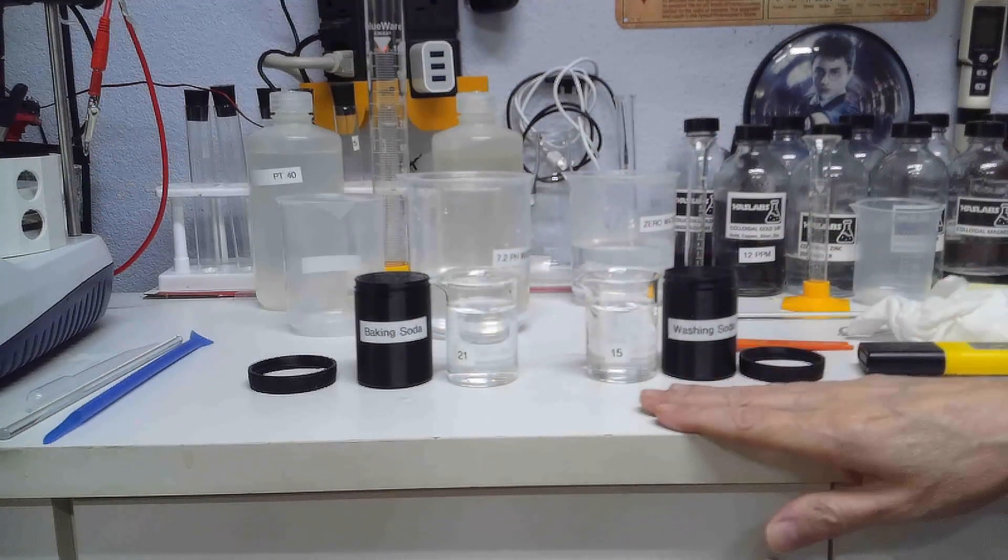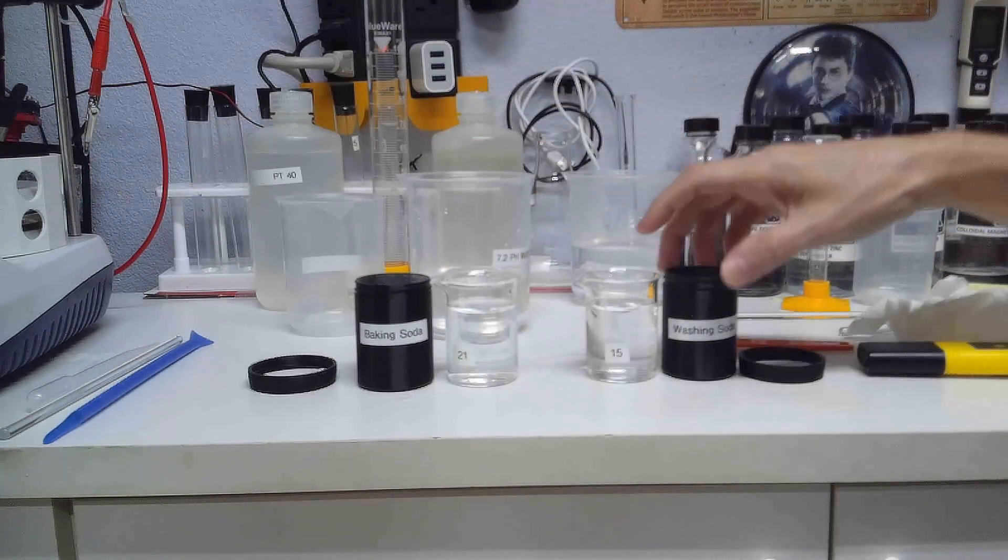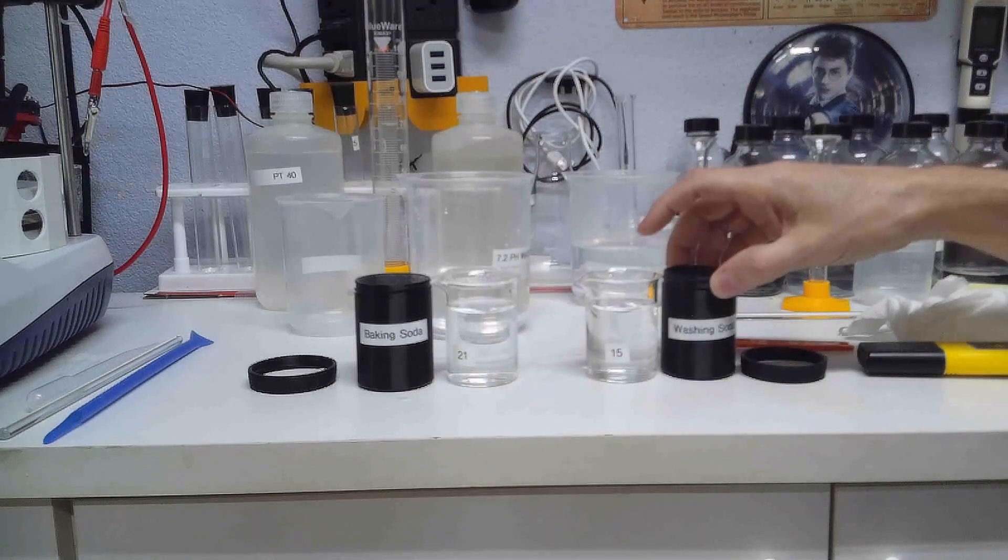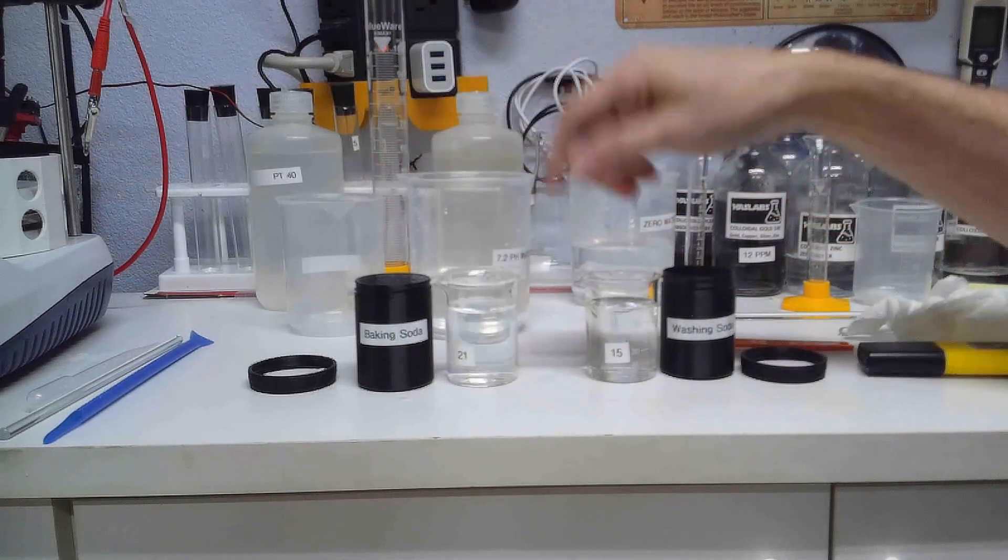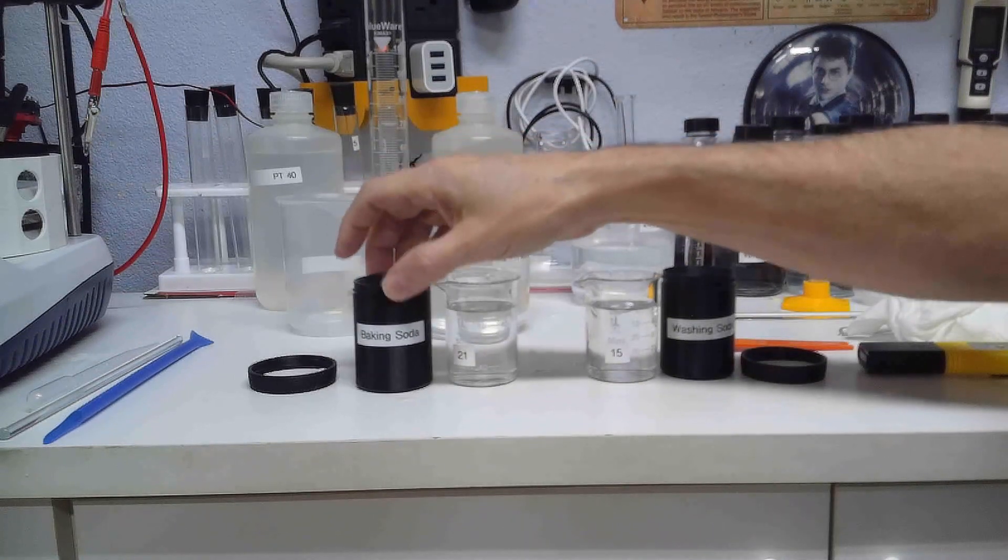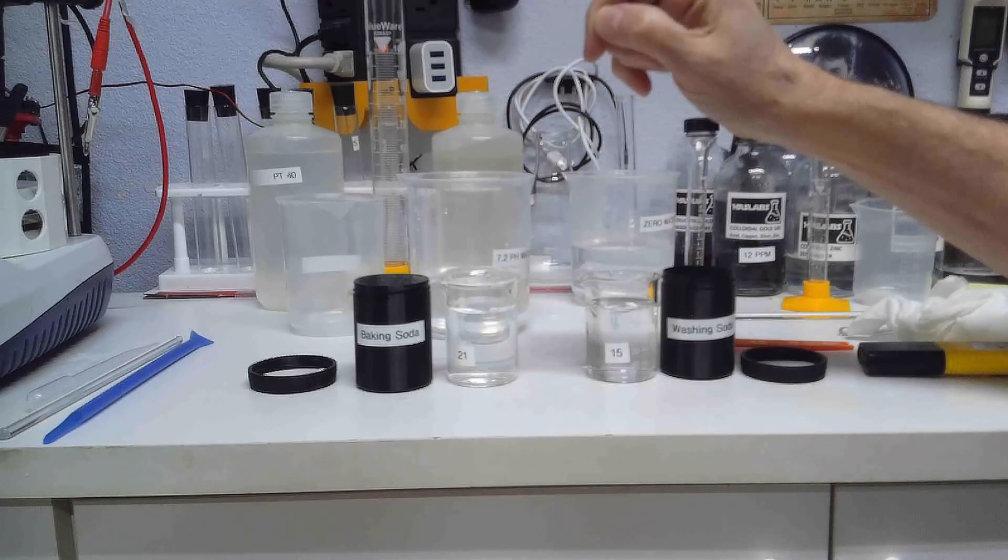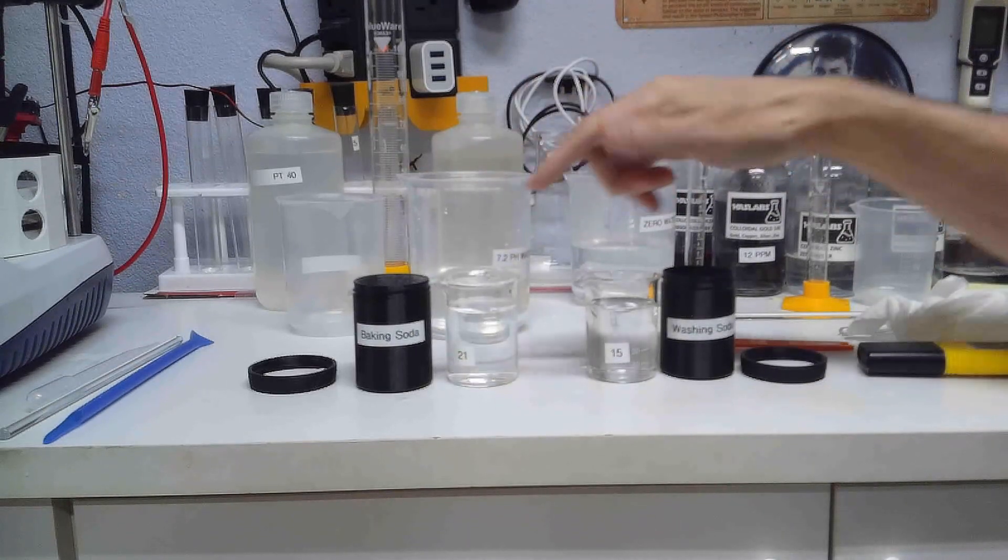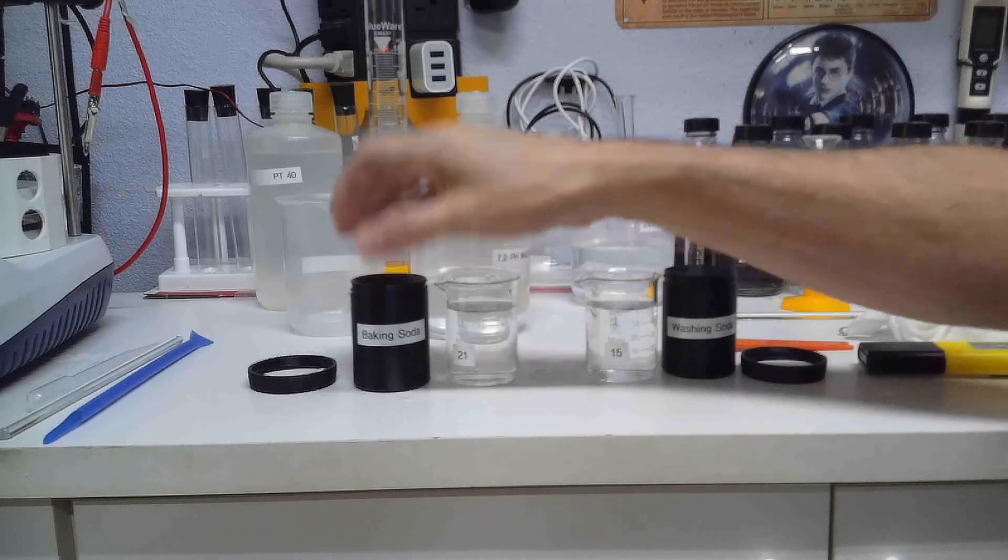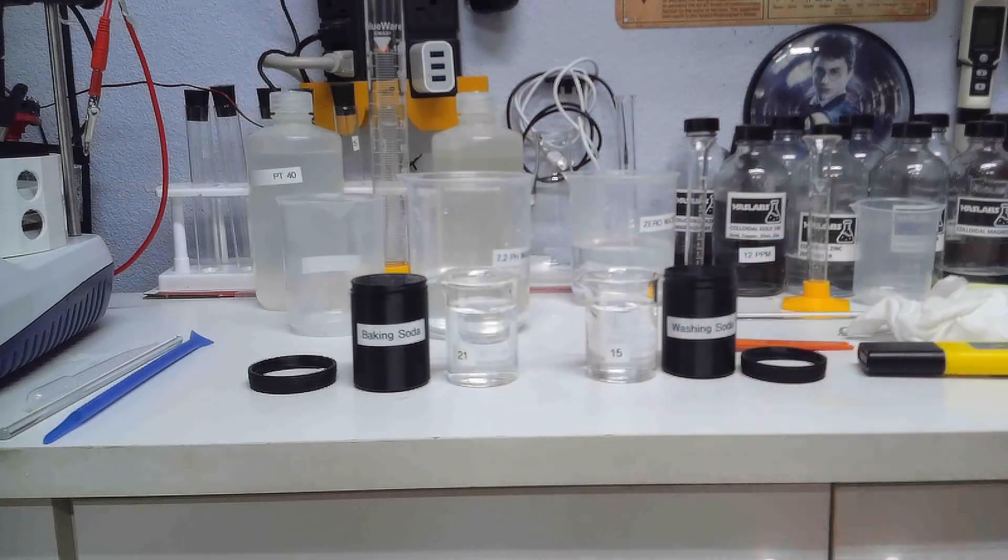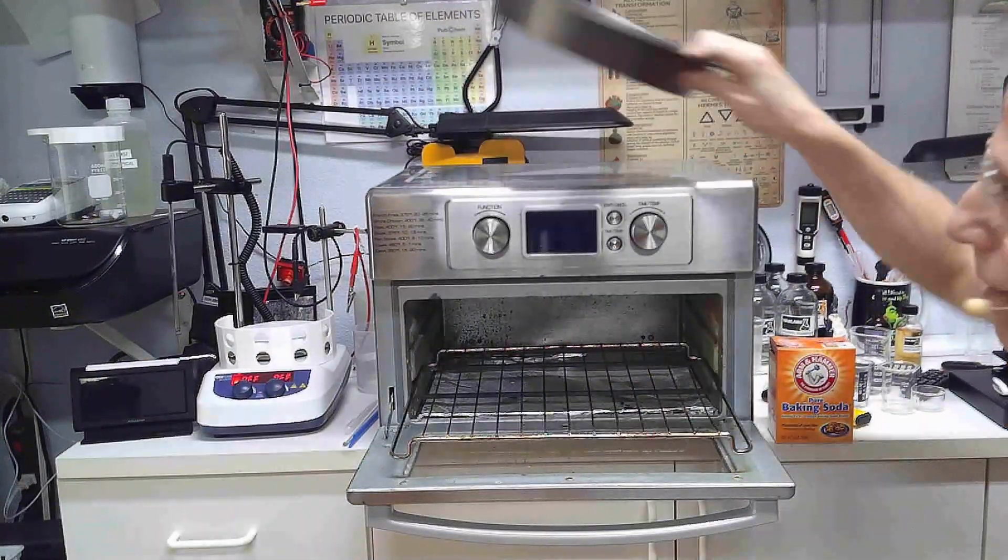So I'm going to show you how to. Now anything you consume needs to be food grade, so you can buy washing soda online, food grade washing soda, or you can make your own from baking soda. And I'm going to show you how to make washing soda from baking soda. I've done it both ways and the store-bought washing soda and the one that you make yourself from baking soda has the same pH and it's simple to do.